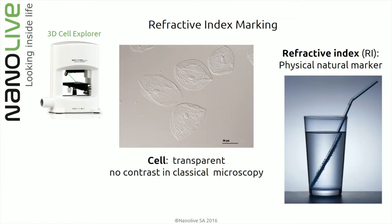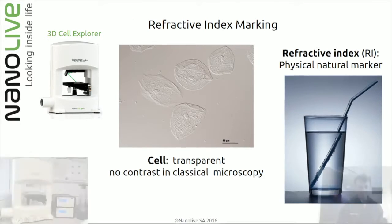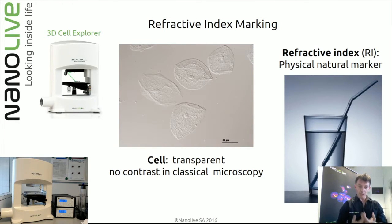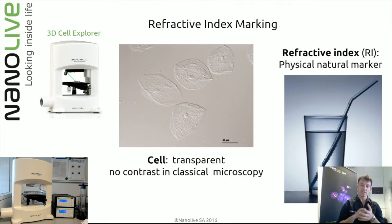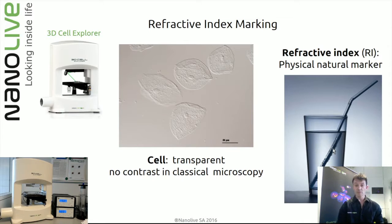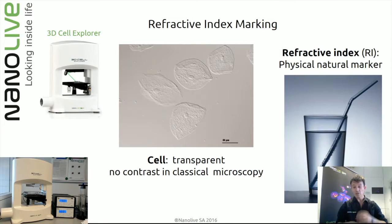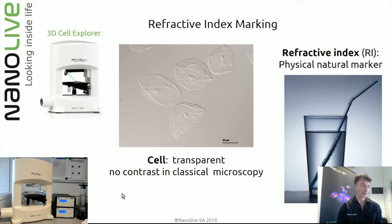Cells are transparent and offer little contrast for microscopy, but all transparent media have a physical marker — the refractive index. To understand what the refractive index is: look at a glass of water where at the air-water interface a straw looks broken, because the refractive index difference is large. If you can precisely measure this physical property point by point and locate it where it belongs, you can reconstruct the 3D structure of the system — glass, water, air — and this is precisely what we do with the 3D Cell Explorer.